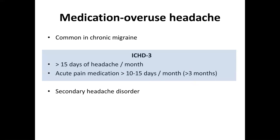Medication overuse headache is certainly more common in patients with chronic migraine, but it also occurs in patients with tension-type headache. It's defined by the ICHD as a headache occurring on more than 15 days in a given month, on the background of excessive acute pain medication use for at least 10 to 15 days for more than three months. It is regarded as a secondary headache disorder.